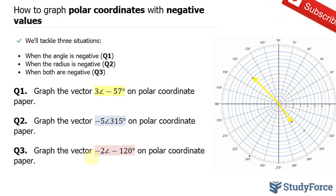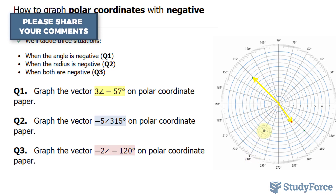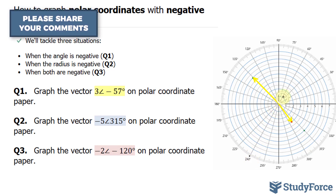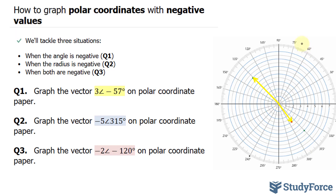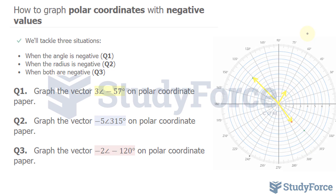The radius here is negative 2. Negative 2 tells us that we'll be shooting in the opposite direction, as opposed to towards the angle. So 240 is the same thing as — using this graph — 60 degrees. If I were to subtract 180 from 240, I would get 60 degrees, and my vector would be right here. And so there you have it. That is how to graph polar coordinates with negative values.